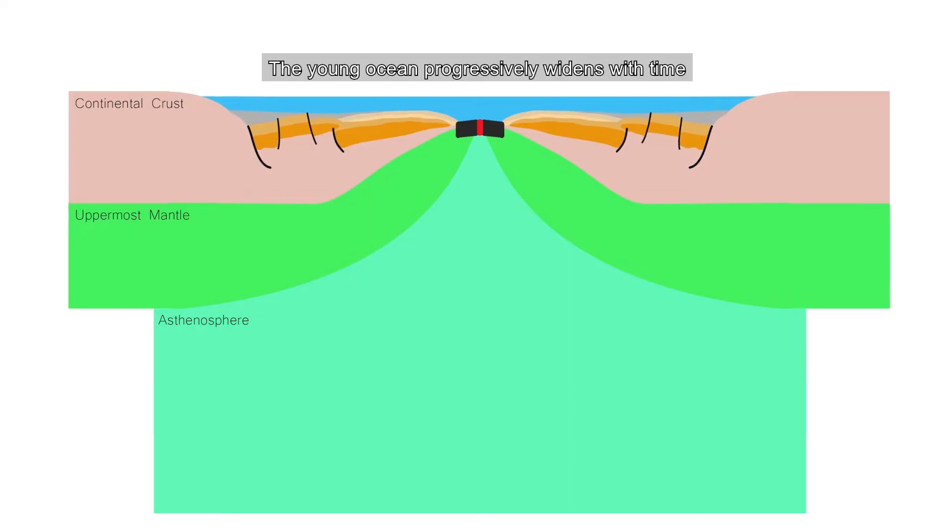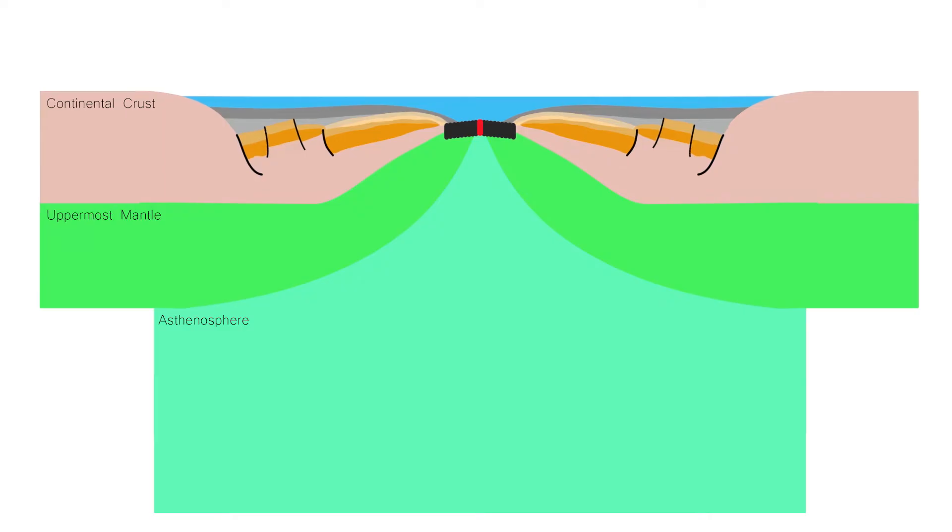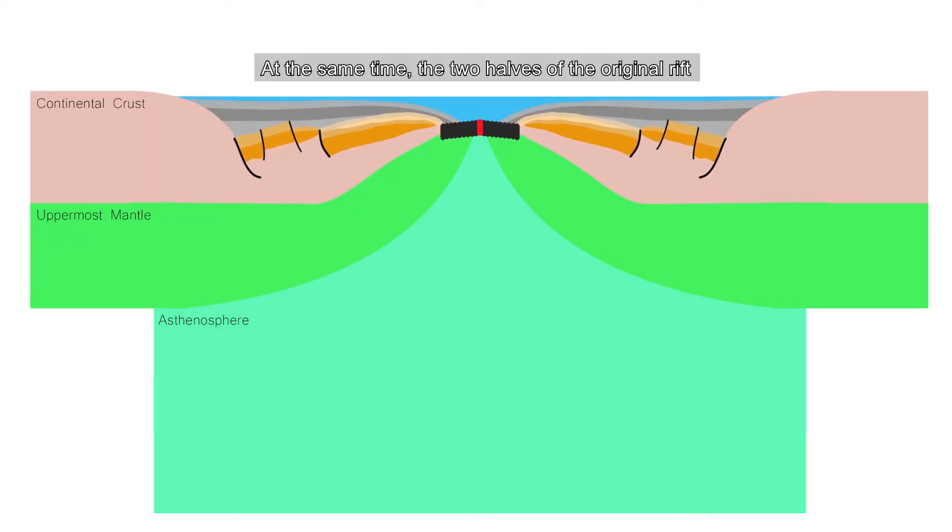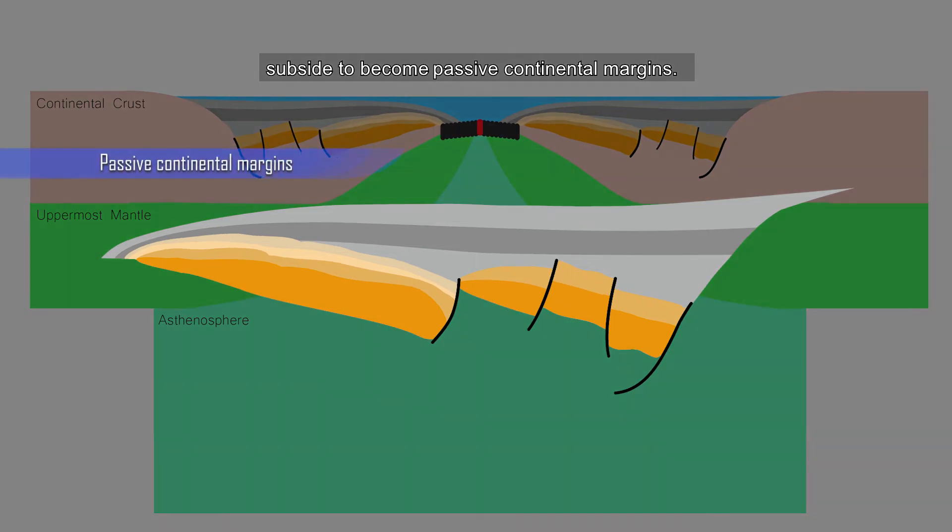The young ocean progressively widens with time once seafloor spreading begins. At the same time, the two halves of the original rift subside to become passive continental margins.